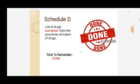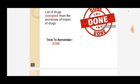Schedule D — the trick to remember is 'Done.' Schedule D is the list of drugs exempted from the provisions of import of drugs. It is already completed or exempted, so the trick is 'Done.'